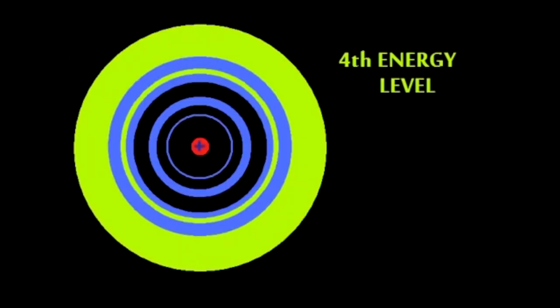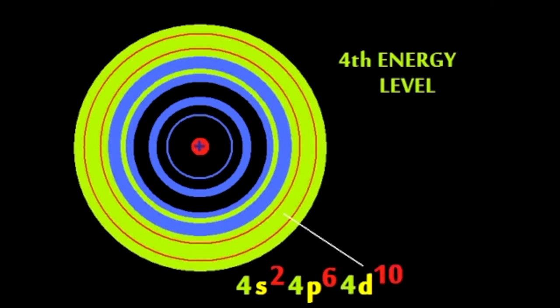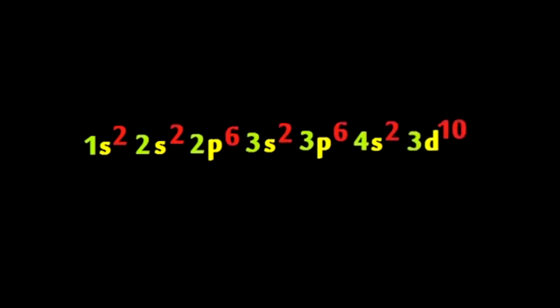The fourth shell is the largest yet, an s and a p and a d, I bet. An f sub-level is also seen, how many electrons? Up to 14. 1s², 2s², 2p⁶, 3s², 3p⁶, 4s², 3d¹⁰.